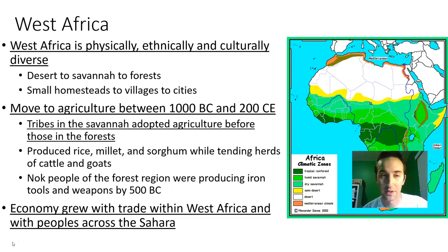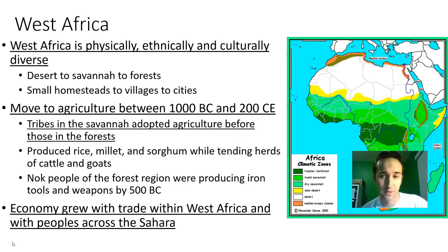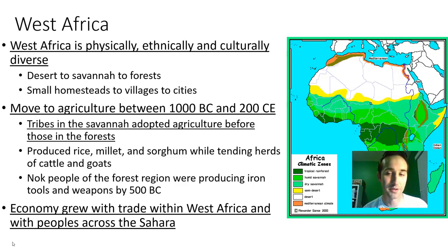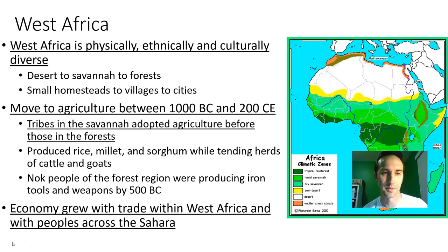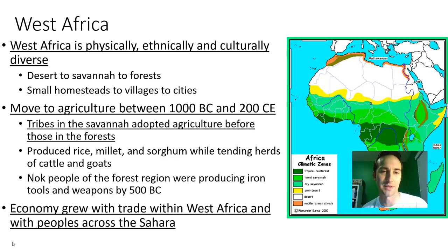Overall, West Africa is incredibly physically diverse in that you've got the desert, the savannah, and the forest in a very small remote region. And you've got a variety of different tribes ethnically, as well as culturally, with different cultural practices and a variety of sizes, from small little homesteads to villages to massive cities.